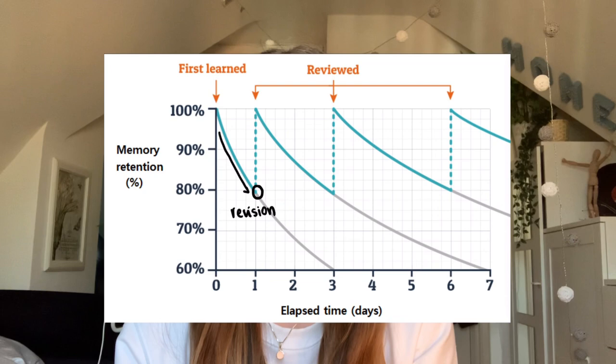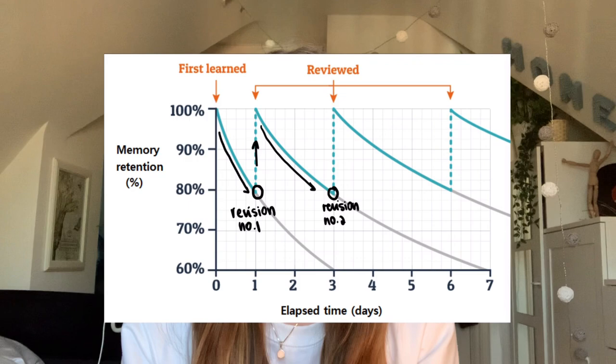Spaced repetition is basically interrupting something called the forgetting curve. The forgetting curve explains how we forget things over a period of time. You want to keep interrupting it by looking over the material every once in a while, and then at the end it stays in your long-term memory and you won't forget it. What I do is review material during the holidays and it works for me most of the time.